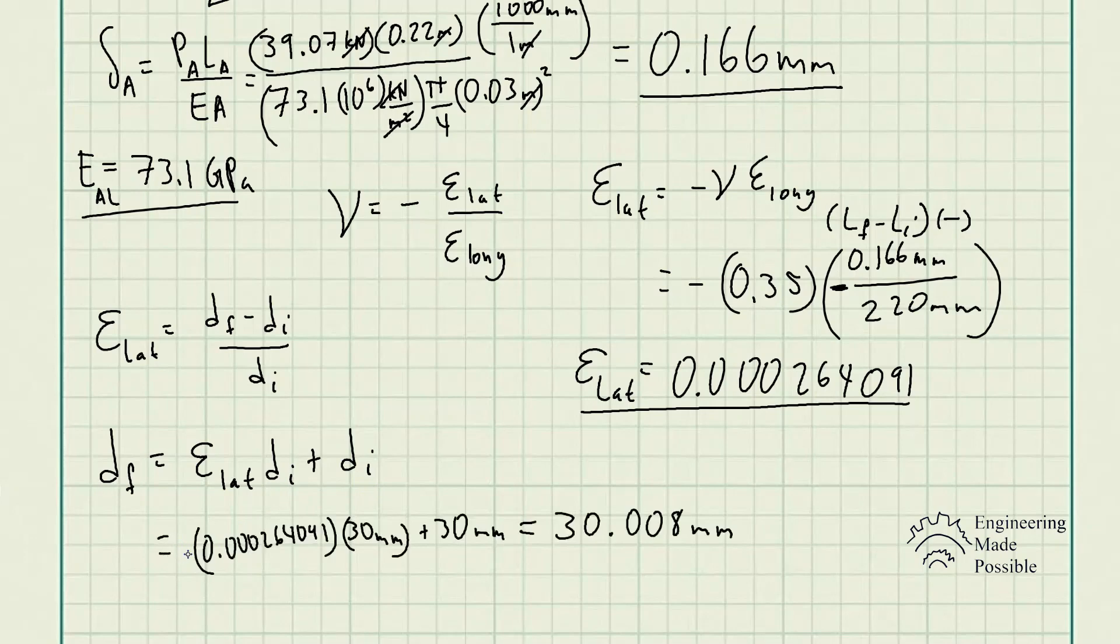Since the length of this cylinder contracted, the diameter actually expanded to compensate for that constant volume. The final diameter is 30.008 millimeters. As you can see, it's not significant, not visually detectable. However, it is there. This is how you calculate using Poisson's ratio, which is the ratio between lateral strain and longitudinal strain. This is why Poisson's ratio is very useful, and different materials have different Poisson's ratios.